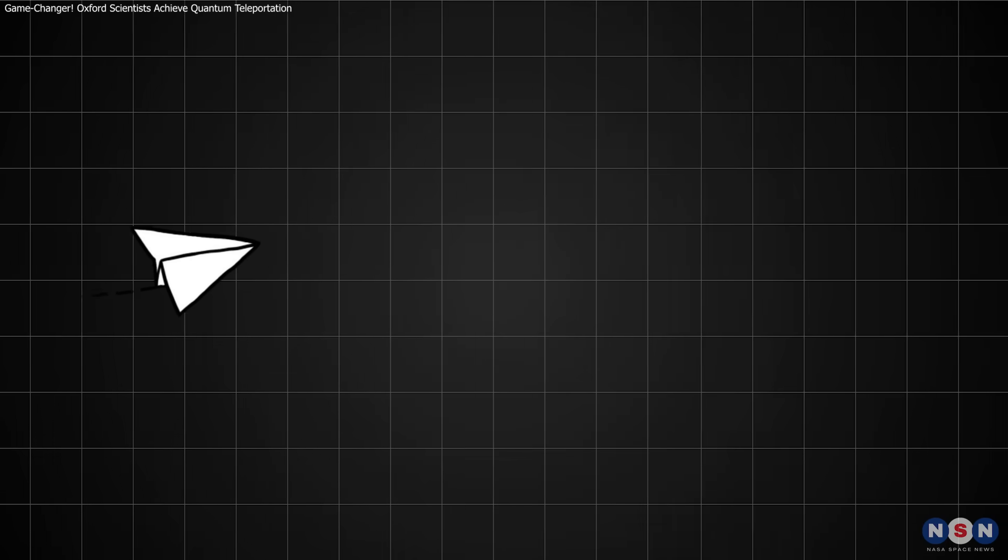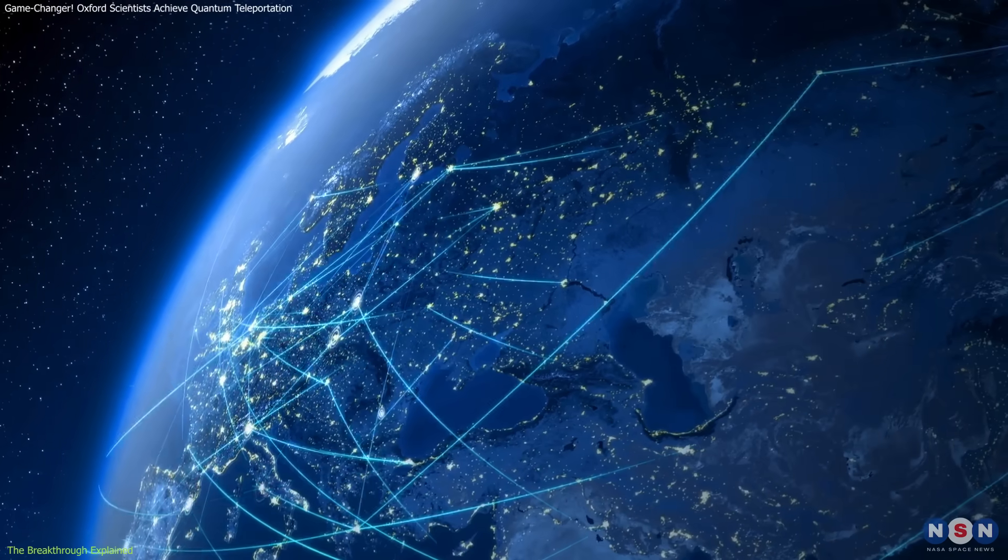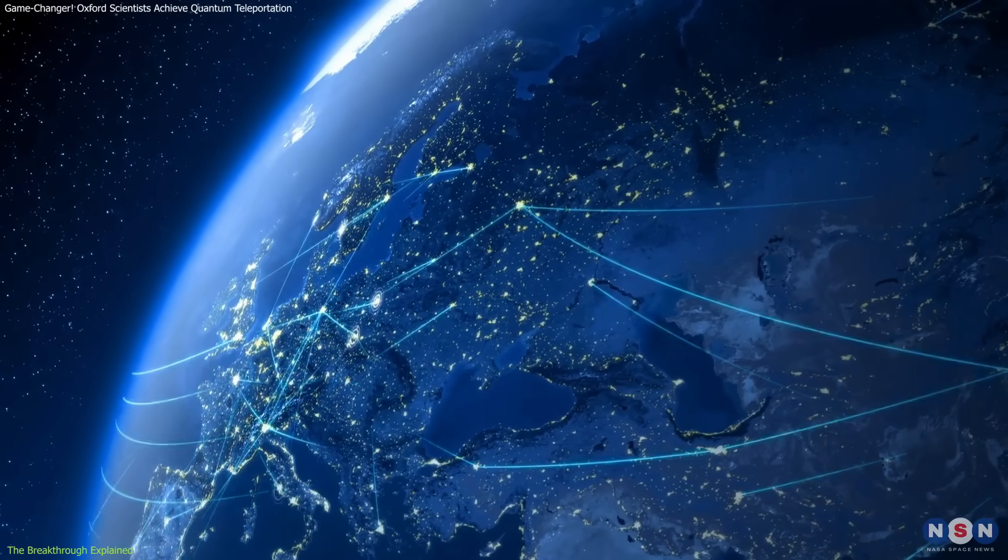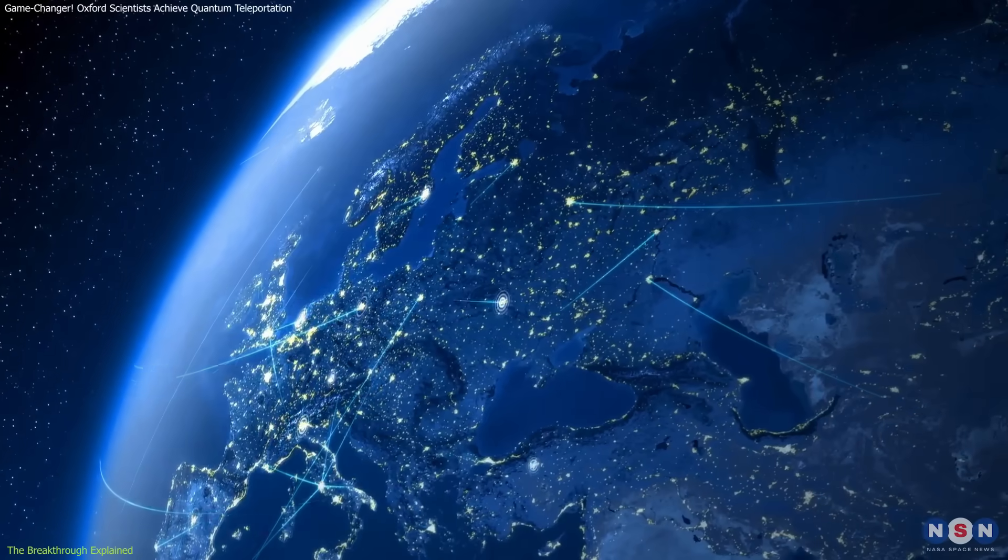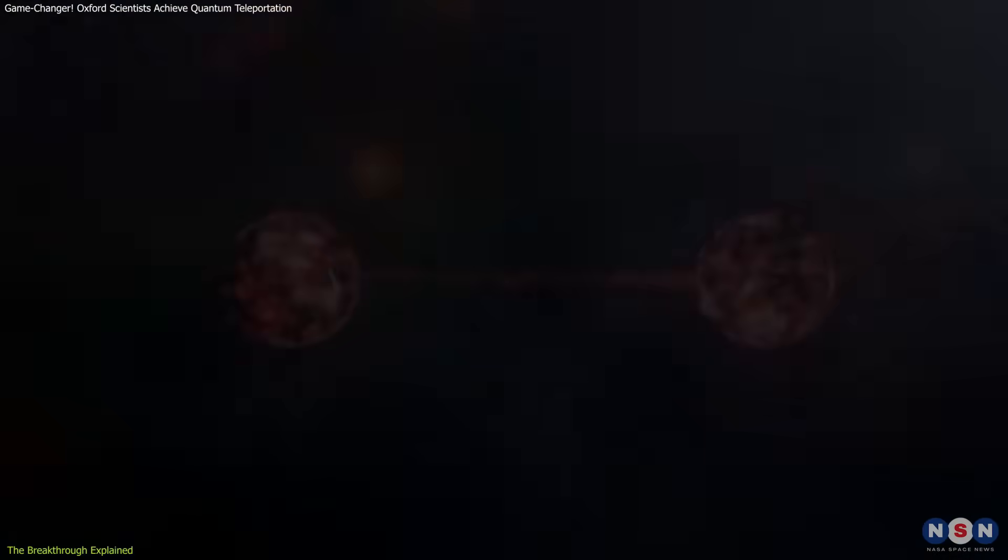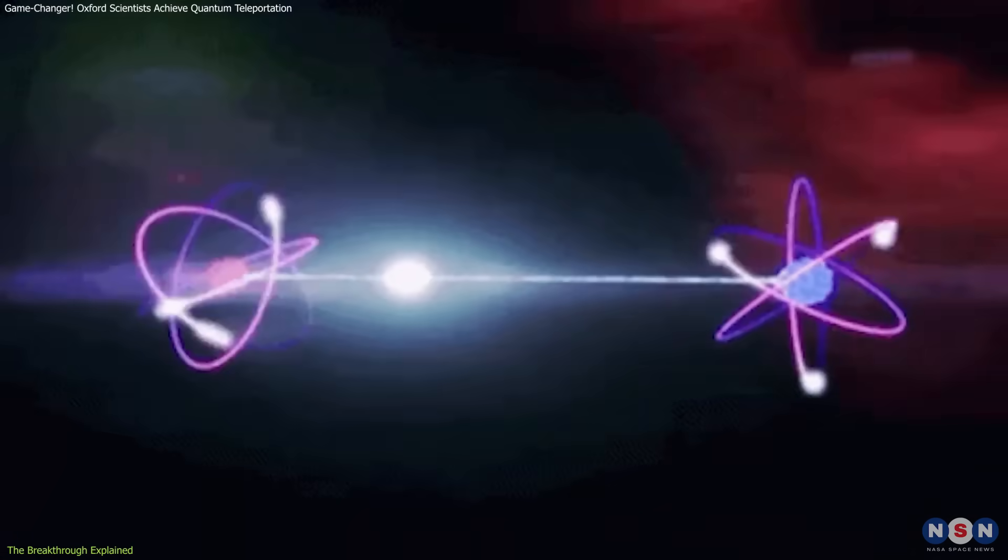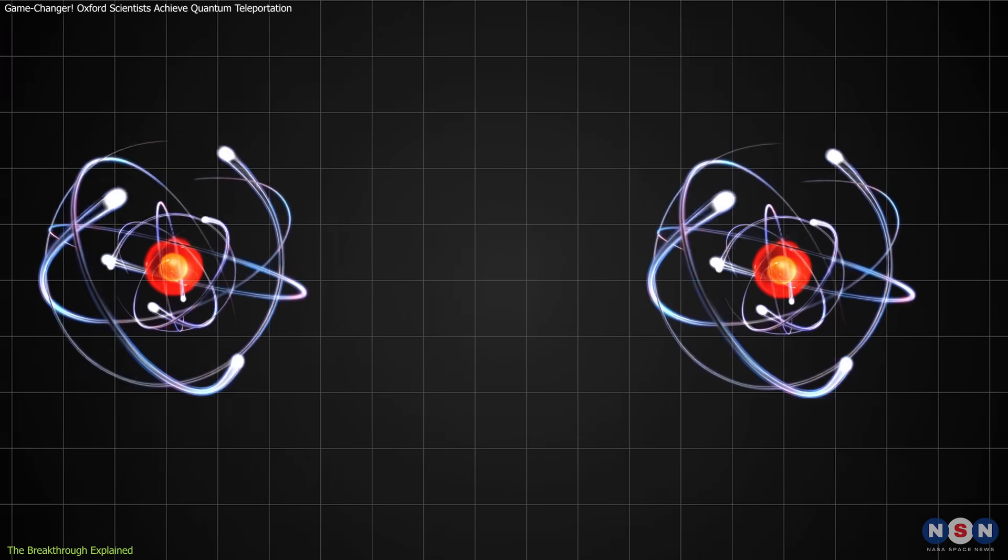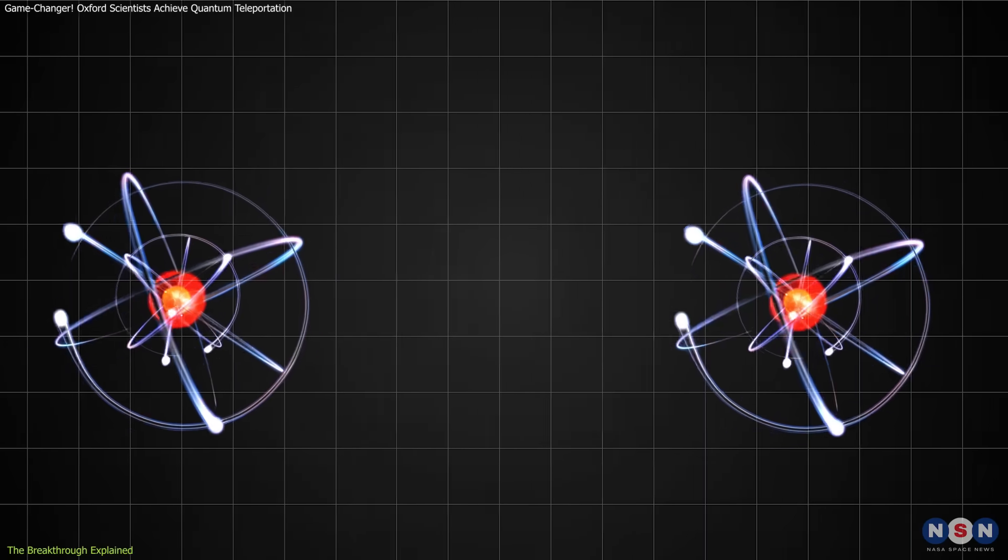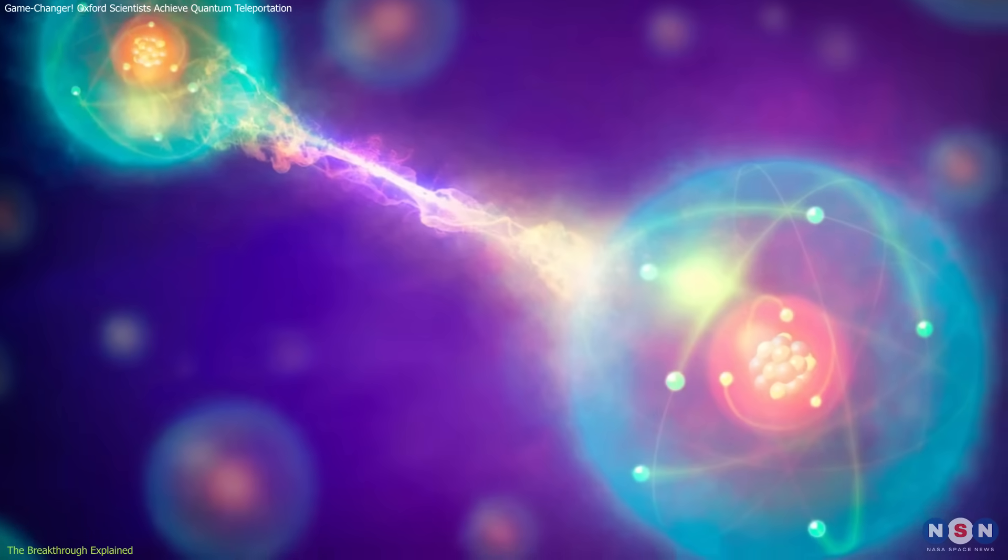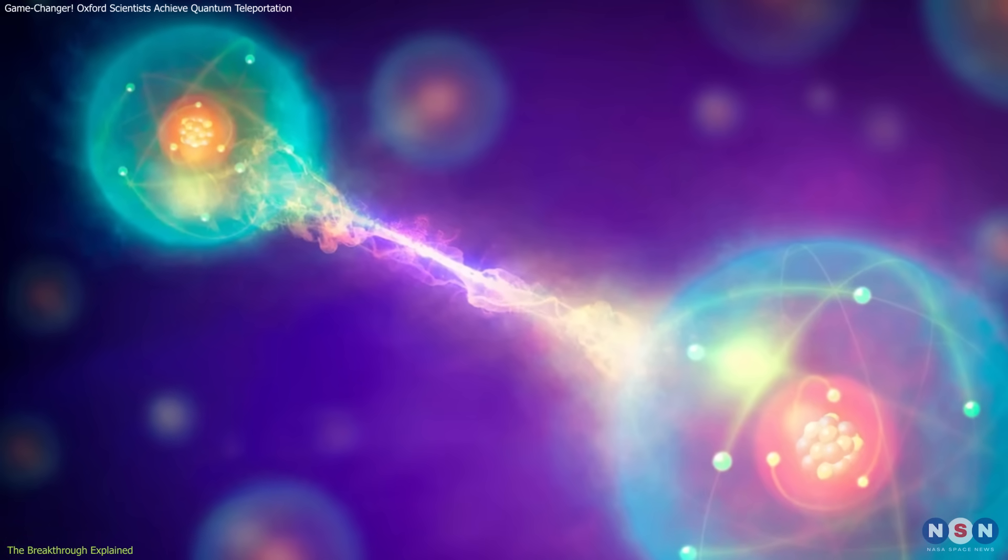Quantum teleportation is not about physically moving objects like in science fiction. Instead, it involves transferring information instantaneously from one place to another using a phenomenon called quantum entanglement. When two quantum particles become entangled, their states are linked no matter how far apart they are. If one particle's state changes, the other changes instantly, as if they were still connected. This is what Einstein famously referred to as spooky action at a distance.